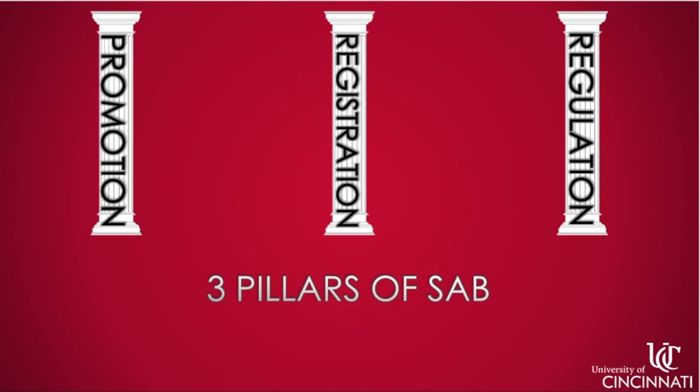For our second pillar, registration: SAB registers new organizations and coordinates the annual re-registration process, or RESET, for existing registered student organizations. And for our third pillar, regulation: SAB regulates in accordance with various university policies and works with newly formed groups or leaders so that they may achieve an organized, positive, and enriching experience.